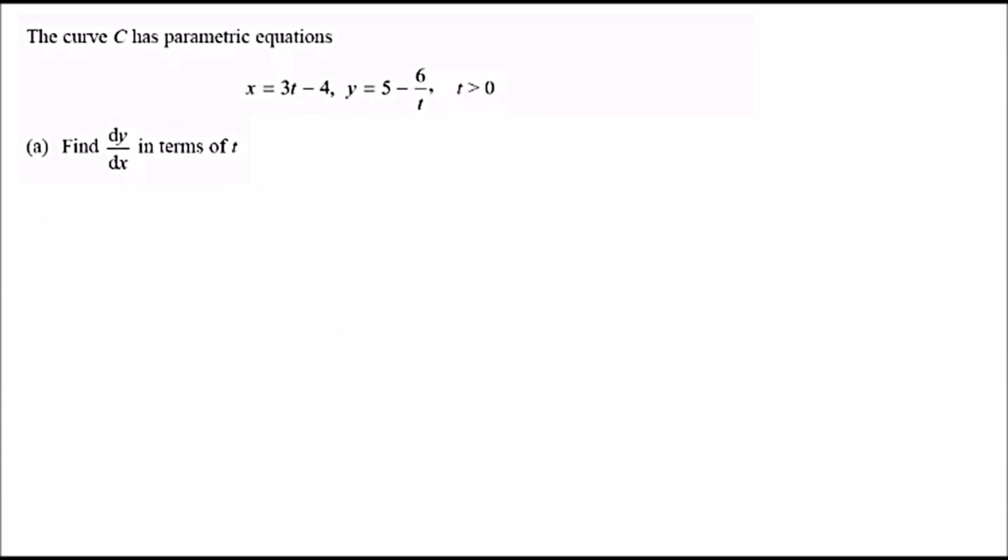Okay guys, here we go. Welcome to the first question. The curve C has parametric equations x equals 3t minus 4 and y equals 5 minus 6 over t, where t is strictly positive. So part a, let's find the first derivative dy over dx in terms of t.